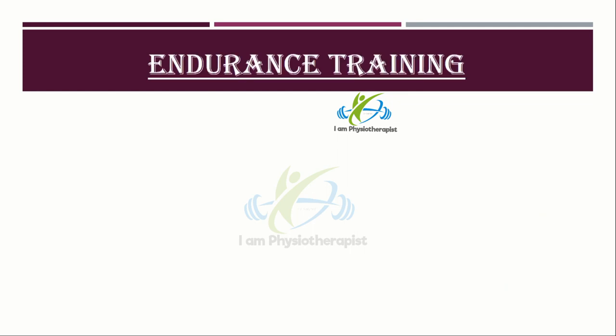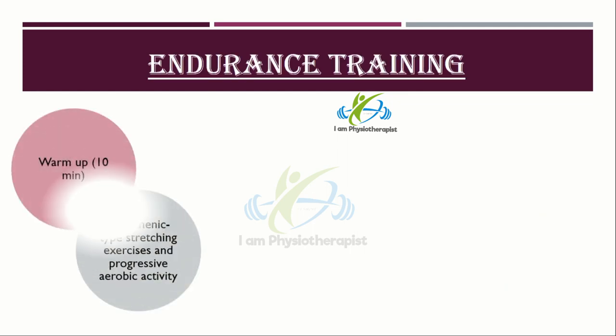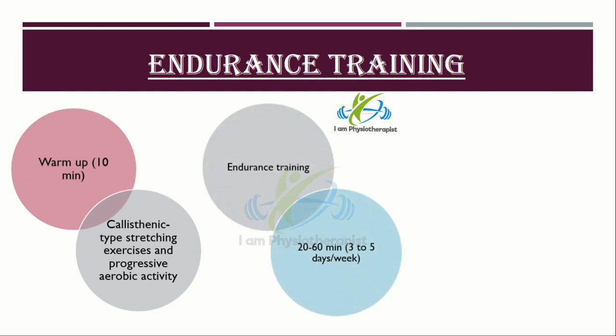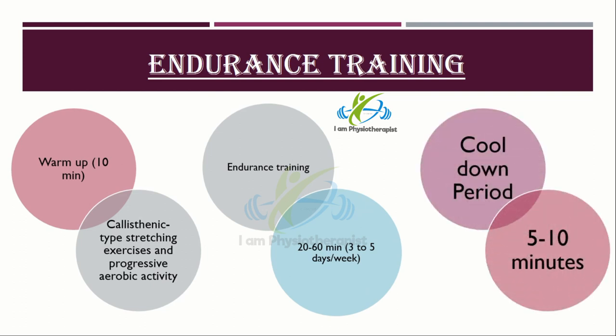The exercise session should consist of the following: a warm-up period of approximately 10 minutes, combining calisthenic-type stretching exercises and progressive aerobic activity that should increase the heart rate close to the prescribed heart rate for the session. Calisthenics are exercises that don't rely on anything but a person's own body weight. Endurance training of 20-60 minutes for 3-5 days per week, then a cool-down period of 5-10 minutes.